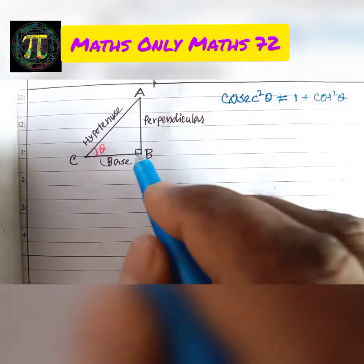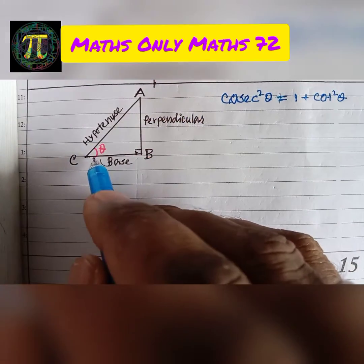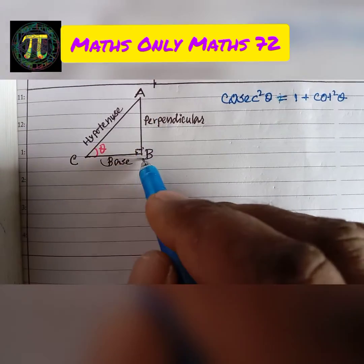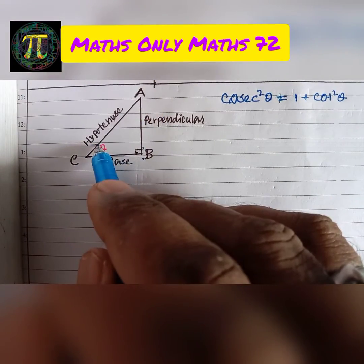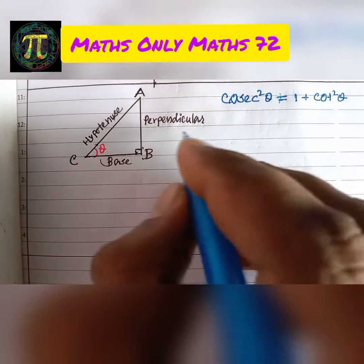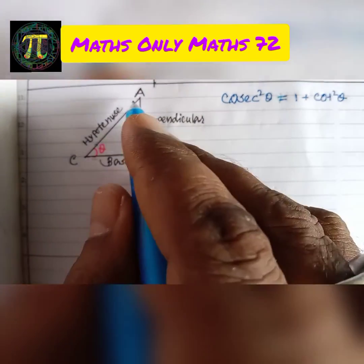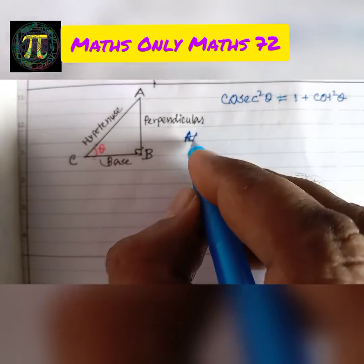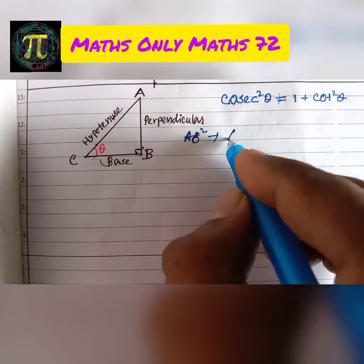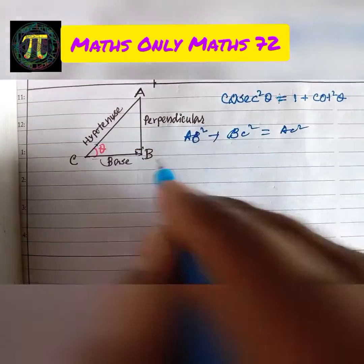In right angle ABC, angle B is 90 degrees. Let angle C be theta. Therefore AB is perpendicular, BC is base, and AC is hypotenuse. According to Pythagoras theorem, perpendicular square plus base square equals hypotenuse square. So we write AB square plus BC square equals AC square.